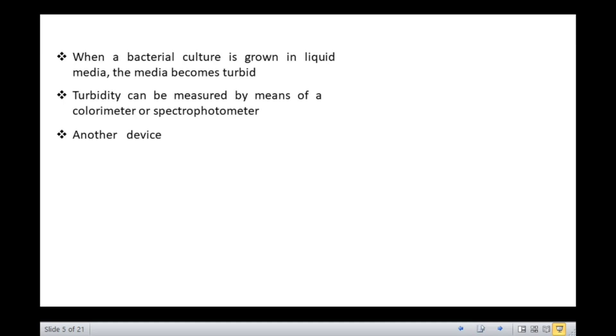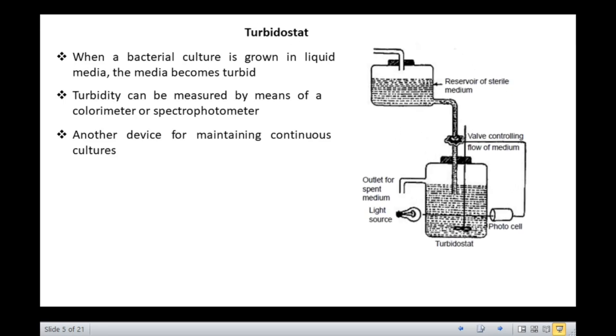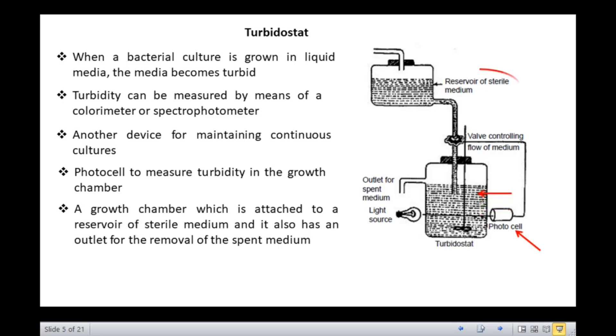Another device for maintaining continuous cultures is a turbidostat. As shown in the figure, it has a photocell to measure turbidity in the growth chamber. Like the chemostat, it has a growth chamber which is attached to a reservoir of sterile medium and it also has an outlet for removal of the spent medium. The flow rate of the fresh medium into the growth chamber is adjusted in such a way that constant turbidity or cell density is maintained in the growth chamber.